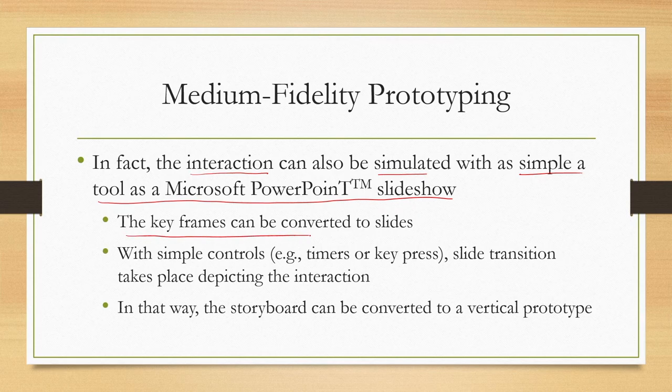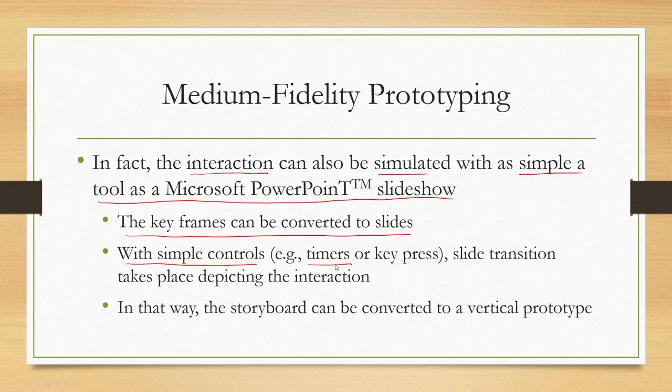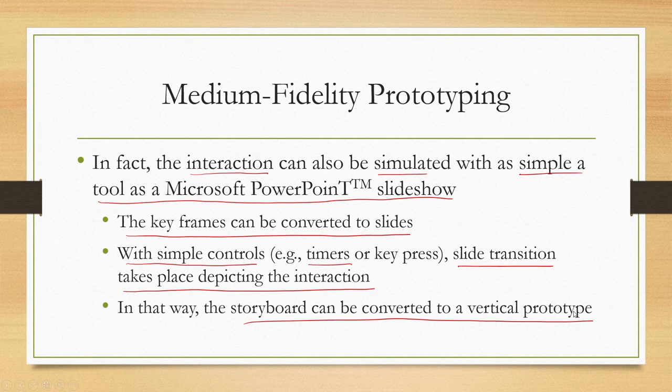In a PowerPoint slideshow, the keyframes can be converted to slides, and with simple controls such as a timer or keypress, slide transitions take place depicting the interaction. In that way, the storyboard can be converted to a medium fidelity vertical prototype. When we refer to medium fidelity, we are essentially referring to the ideas of low fidelity but implementing those ideas with the help of a computer rather than non-technological means such as papers or paints. The ideas — interface sketches, storyboards, keyframes — remain the same.